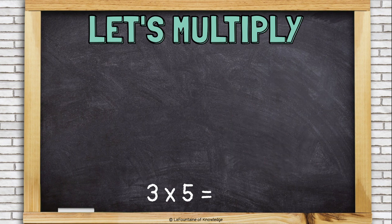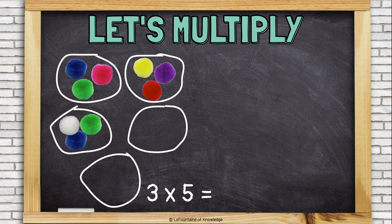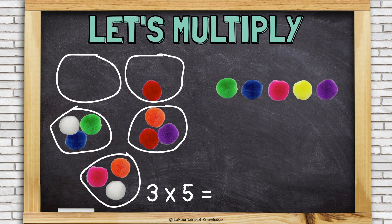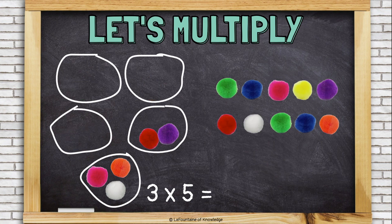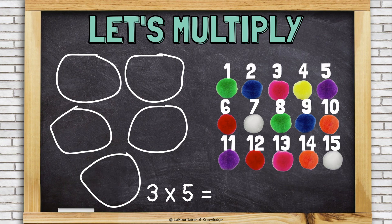Another way to look at this is to start with 5 groups and put 3 pom-poms in each group. Once again, I need to take all of the pom-poms out of their groups to find the total number of pom-poms, and that is the answer to my multiplication problem. Once again, the answer is 15.